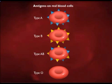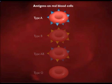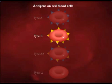There are four different blood groups, based on types of antigens on the surfaces of the red blood cells. People who are type A have A antigens, and those who are type B have B antigens on the surfaces of their red blood cells.